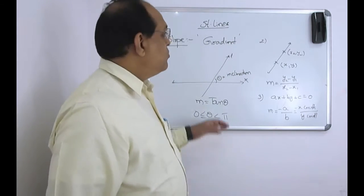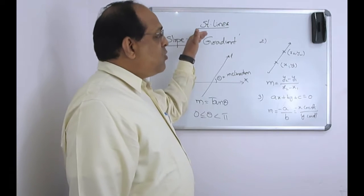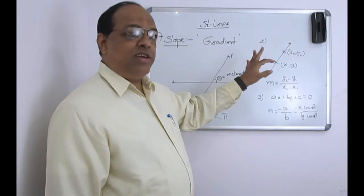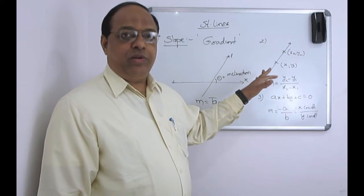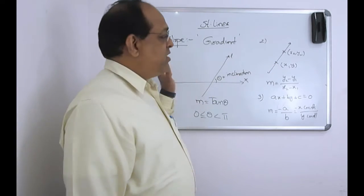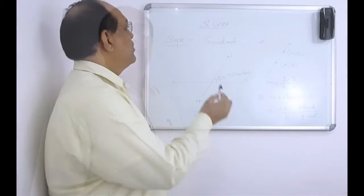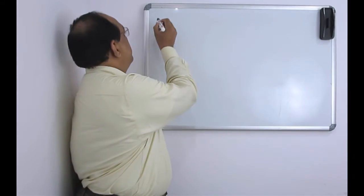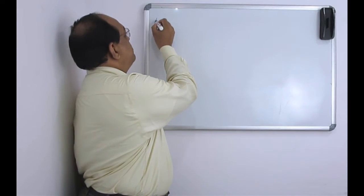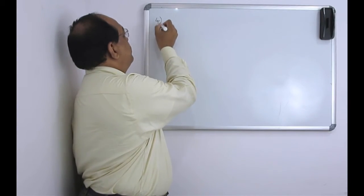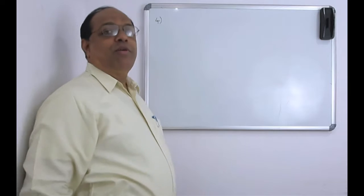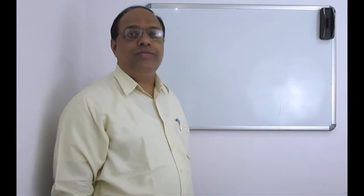The slope in this case is minus a by b — that means minus the x-coefficient by the y-coefficient. So slope in these three cases I have explained. Let us copy this down and continue about the slope.